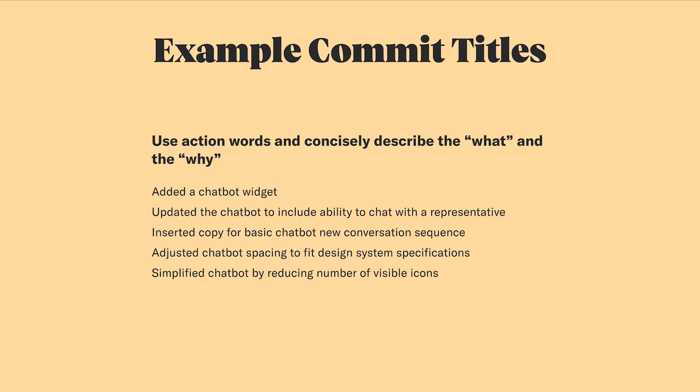Once you are ready to commit, you have the option of adding a title and description to your work. This gives you a great opportunity to document what you've been thinking about and why you made these changes. We recommend giving your commits a title that will help you understand the story of how that work was progressing, even if you're looking at it several weeks or months later. Think to yourself: if my teammate were to open this and read only this commit, would they get it? Would they know what I was doing? When your whole team agrees to a naming convention for commit titles, you'll also be able to scan through other people's work and understand at a glance what they were working on.